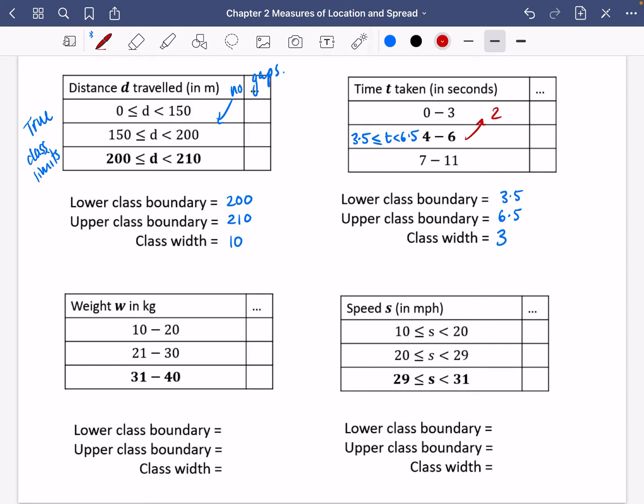Most people, if they look at this, would think, oh, yeah, the class boundary is 2 because the difference between 4 and 6 is 2. But it's not. It's 3.